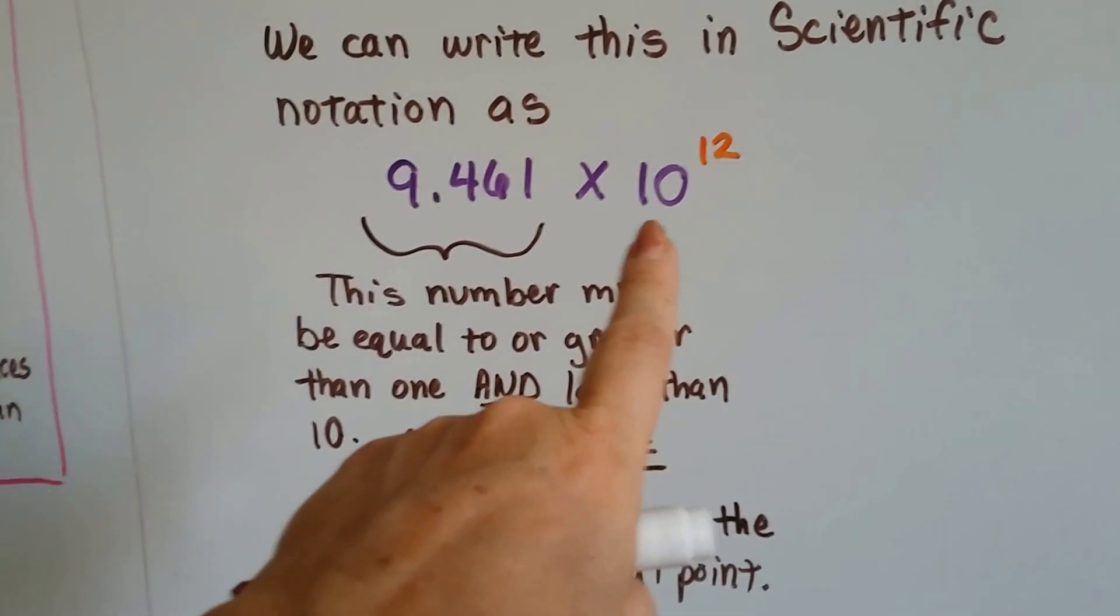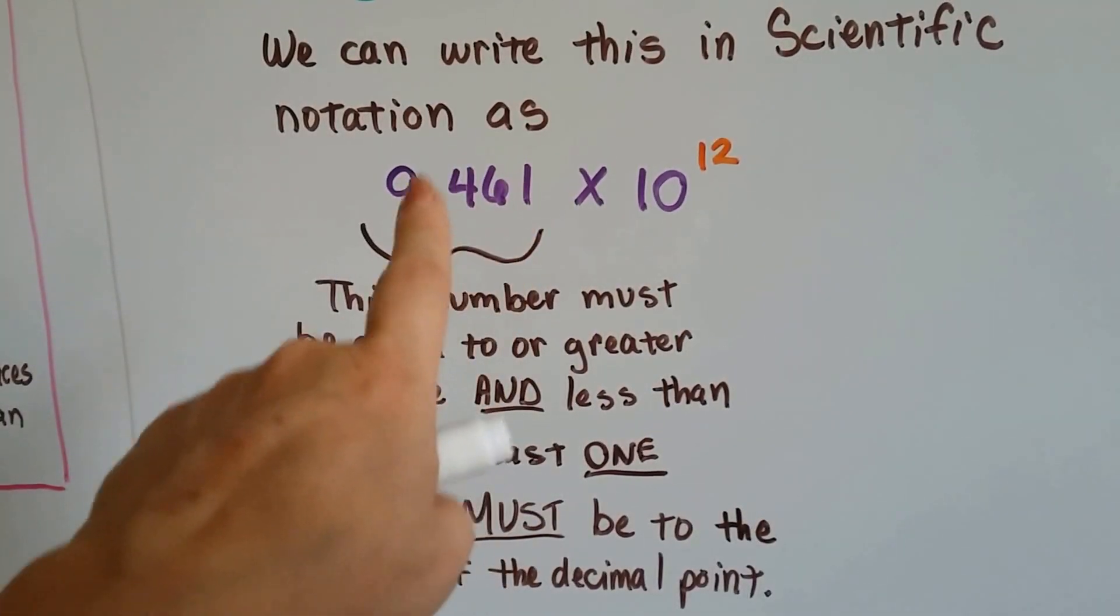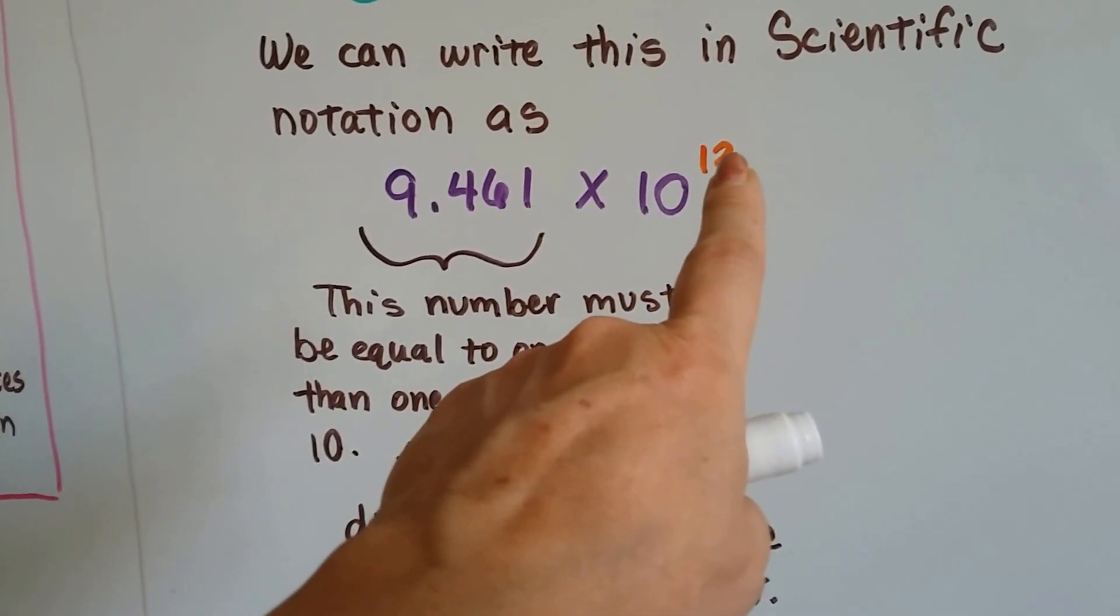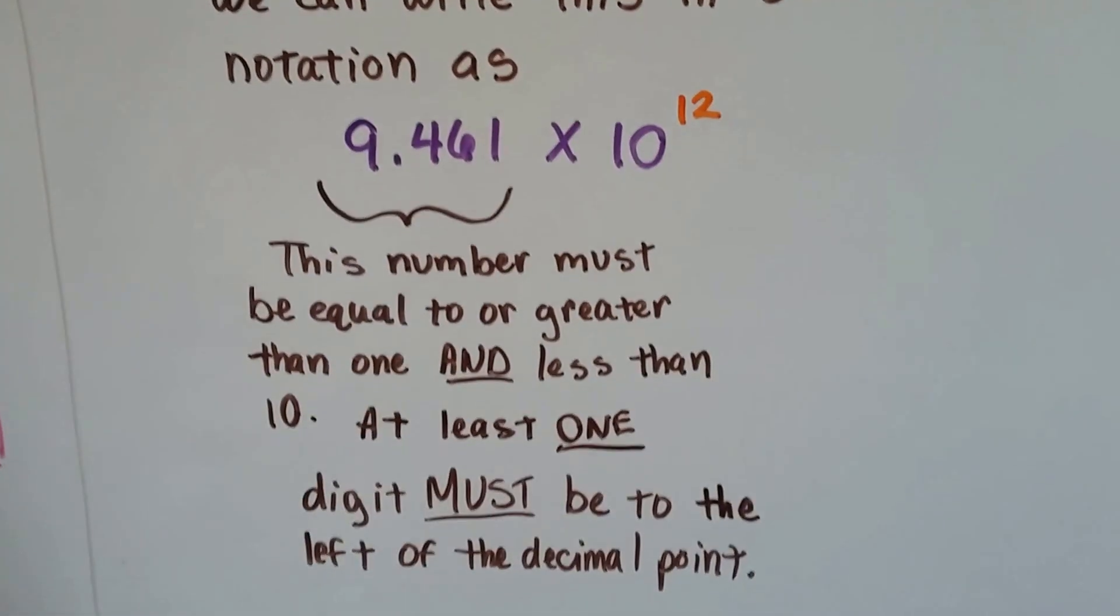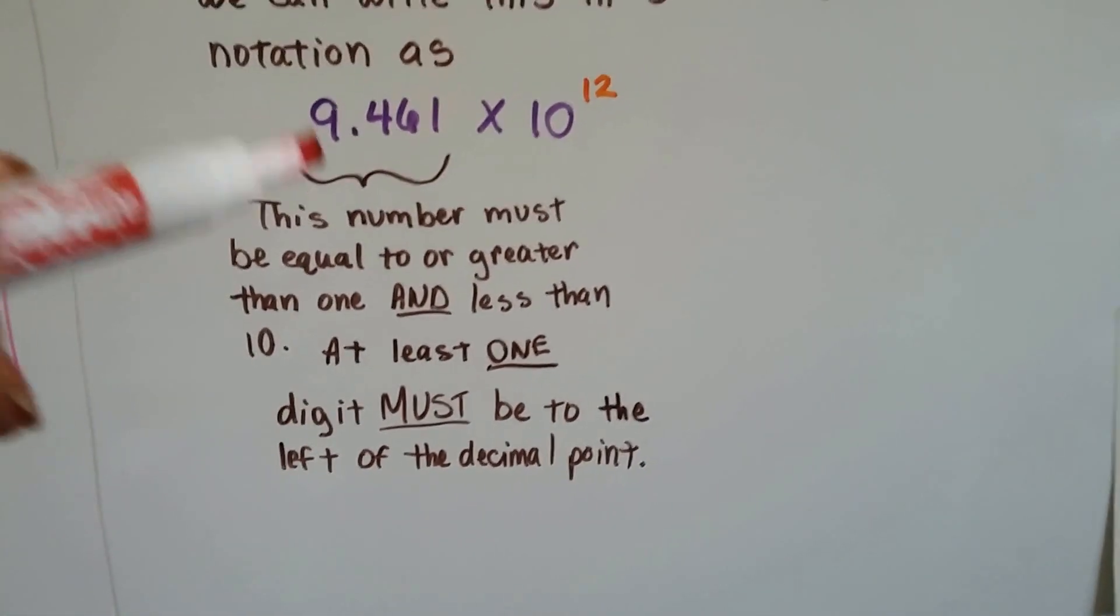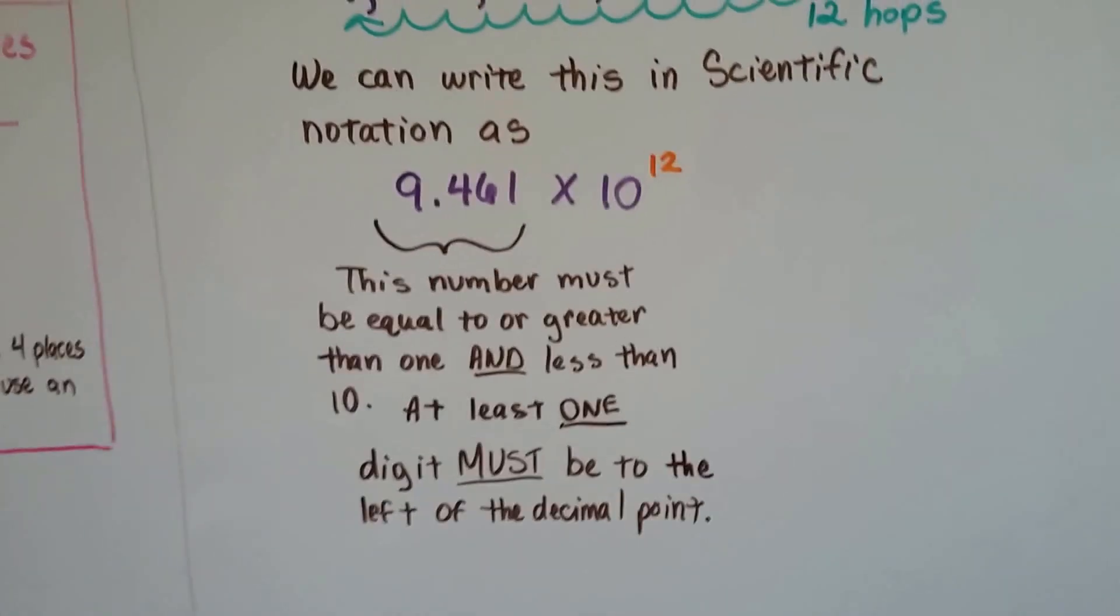And it's got to be less than 10, because if this number were bigger than 10, then we would be able to change the exponent to a 13 instead of a 12, because it would be one bigger. At least one digit must be in front of that decimal point. So those are the rules.